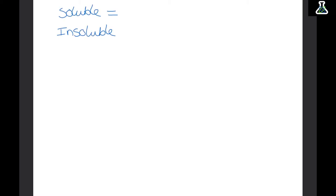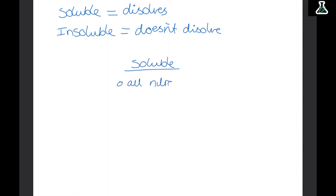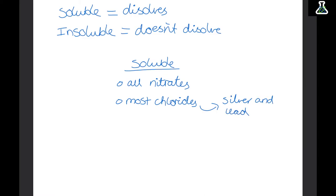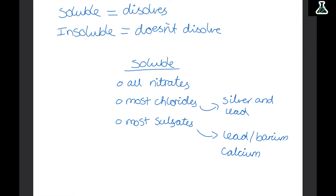These salts can be soluble or insoluble. Something soluble dissolves and something insoluble doesn't. All nitrates are soluble. Most chlorides are also soluble, apart from silver and lead chlorides. Most sulfates are also soluble, apart from lead sulfate, barium sulfate, and calcium sulfate. Most carbonates and most hydroxides are insoluble.